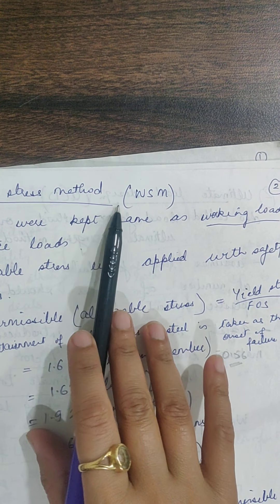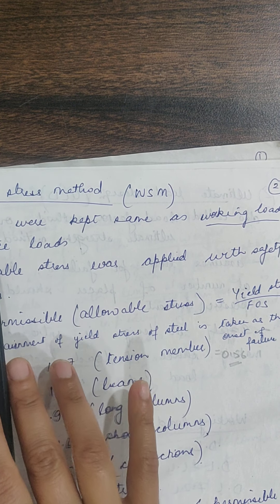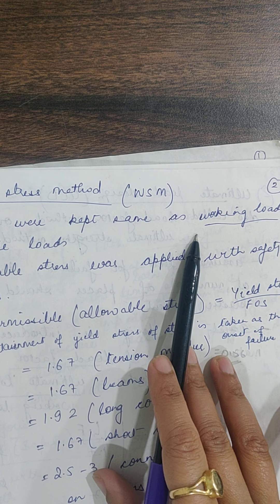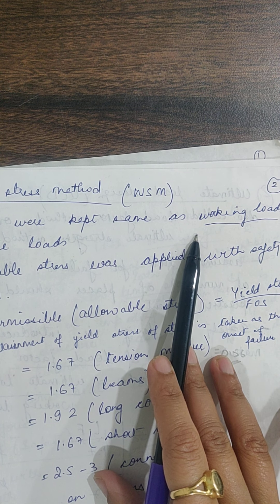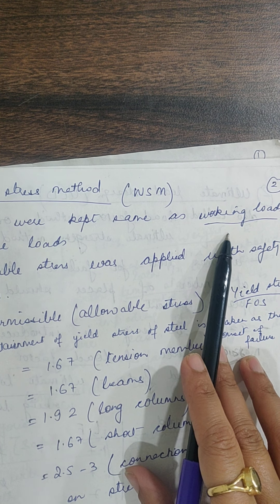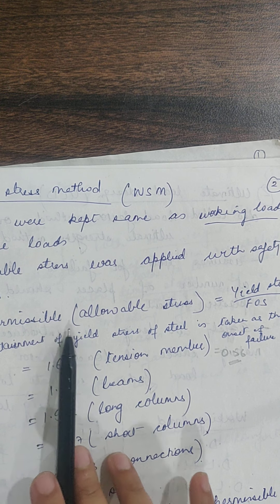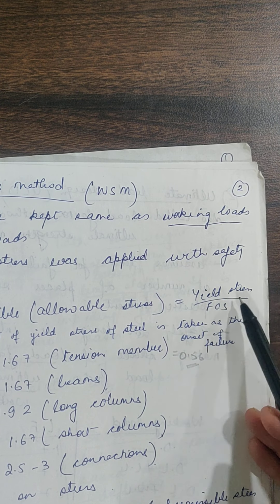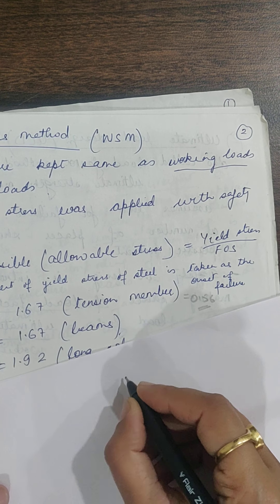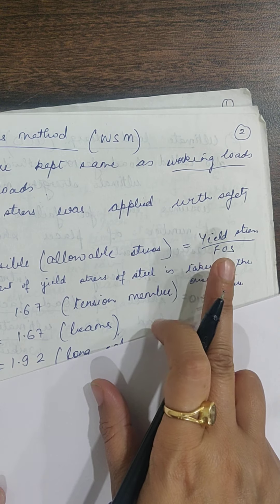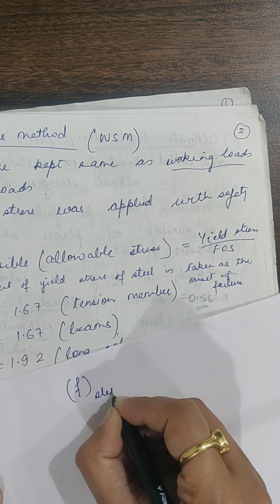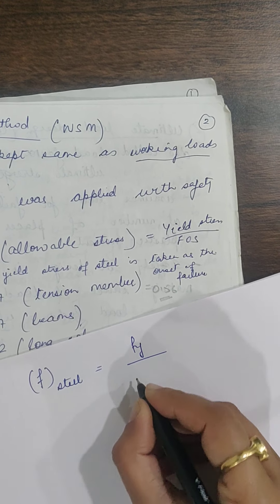In working stress design method, the loads are not changed — we do not put any factor of safety on loads. Whatever load we calculate, we assume it has been calculated accurately and there is no increase in load in future. Instead, the factor of safety is taken on stresses. The permissible stress is taken as yield stress divided by the factor of safety.